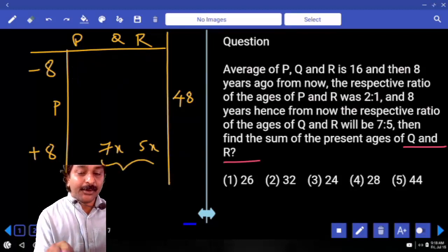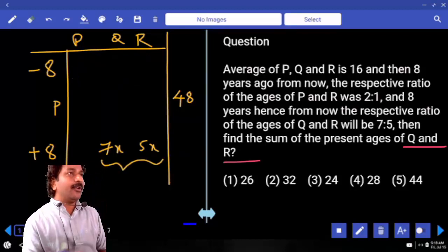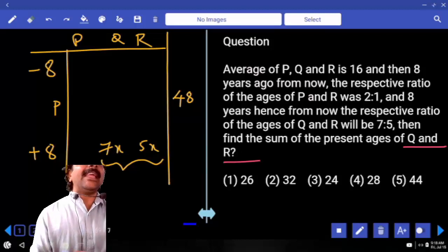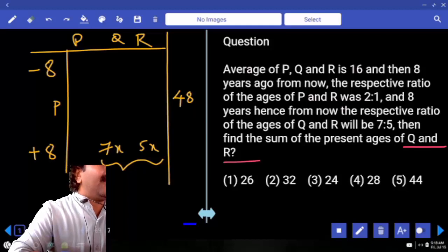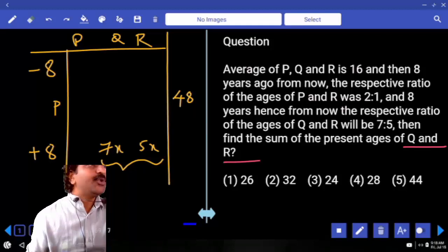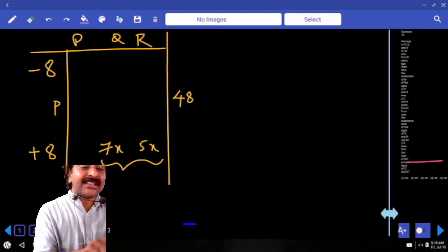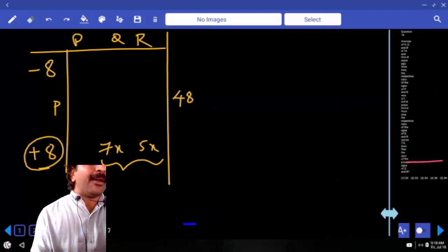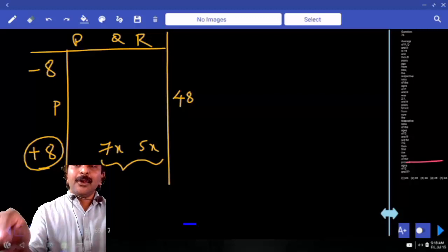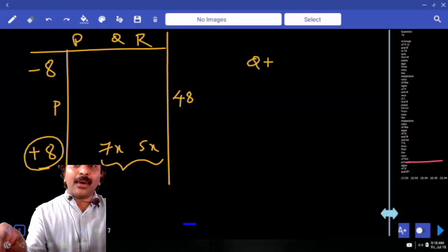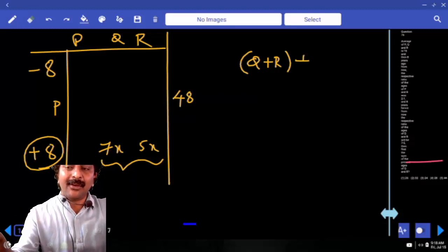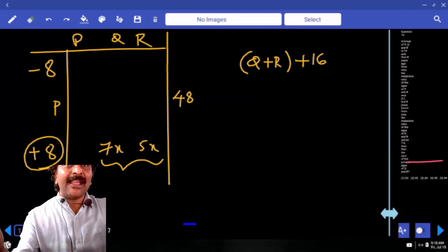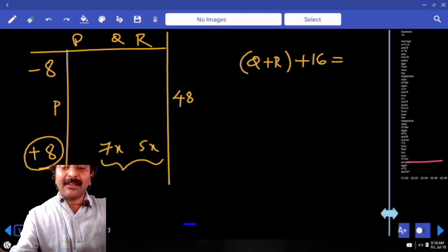Now, with respect to Q and R from the ratio, we know that after 8 years their ages ratio must be 7 is to 5. Sum must be 12 parts, 12x. After 8 years, for each member we have to add 8. To the present age of Q and R to get their ages sum after 8 years, together we have to add 16. And this must be equal to 12x.